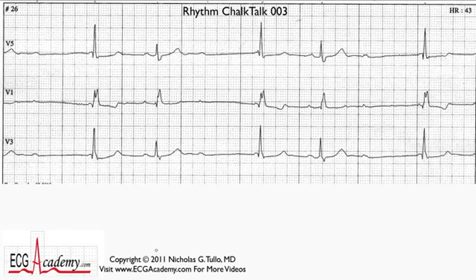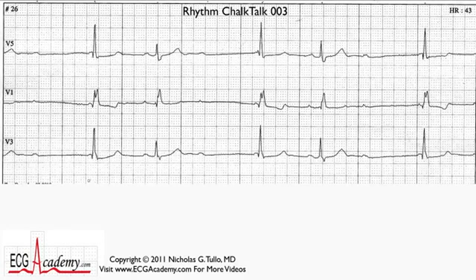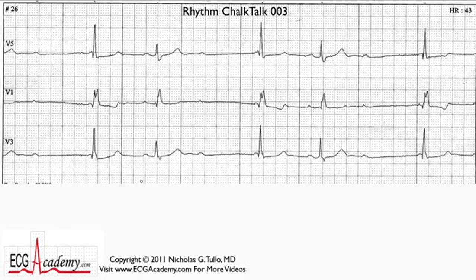This is Rhythm Chalk Talk number 3, and I must say it's very challenging. A lot of cardiologists I know wouldn't get this right, but I'm going to help you work your way through it. One big hint is that this is actually the same patient as Chalk Talk number 2, which was a case of second degree type 2 AV block. Type 1 and type 2 second degree AV block almost never occur in the same patient, at least not at the same time.